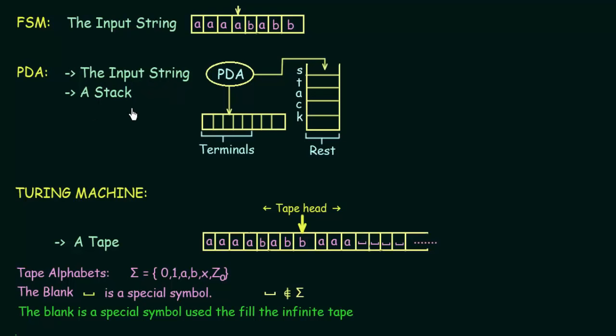What made the push down automata different from finite state machine was the presence of a stack. Because of the presence of this stack, the push down automata was more powerful than finite state machines, and the class of languages that they accept — known as the context free languages — are a higher class of languages as compared to regular languages. This diagram represents that we had the input string and also the stack which added more power to the push down automata.